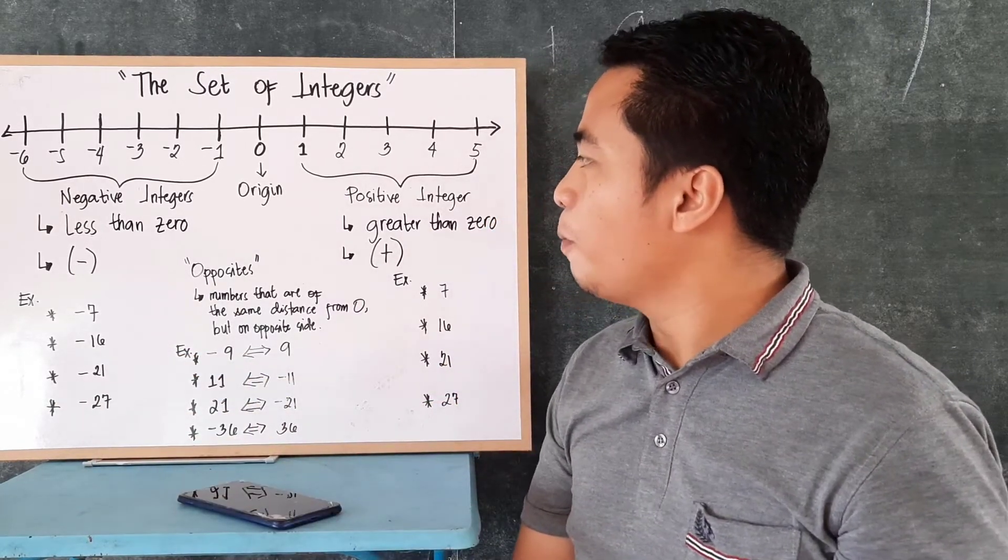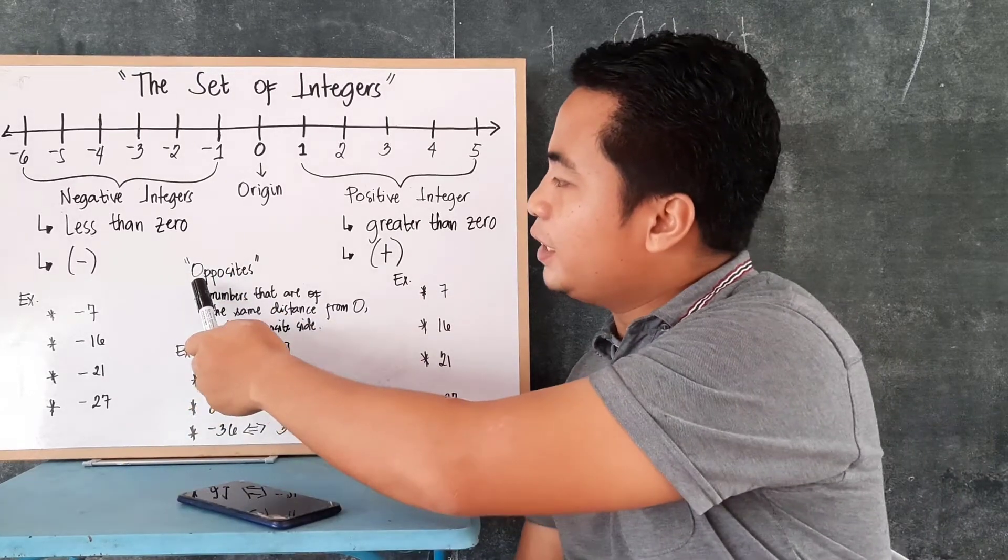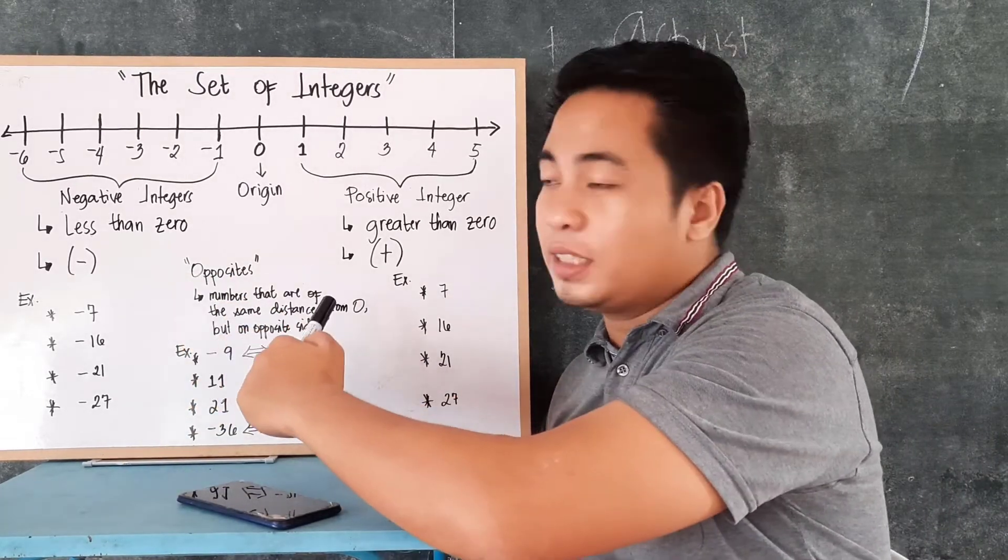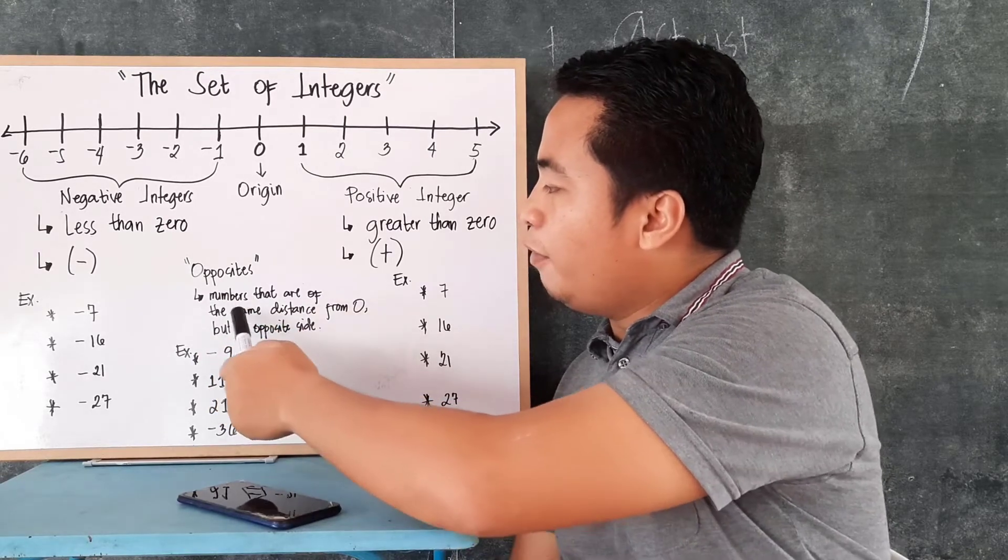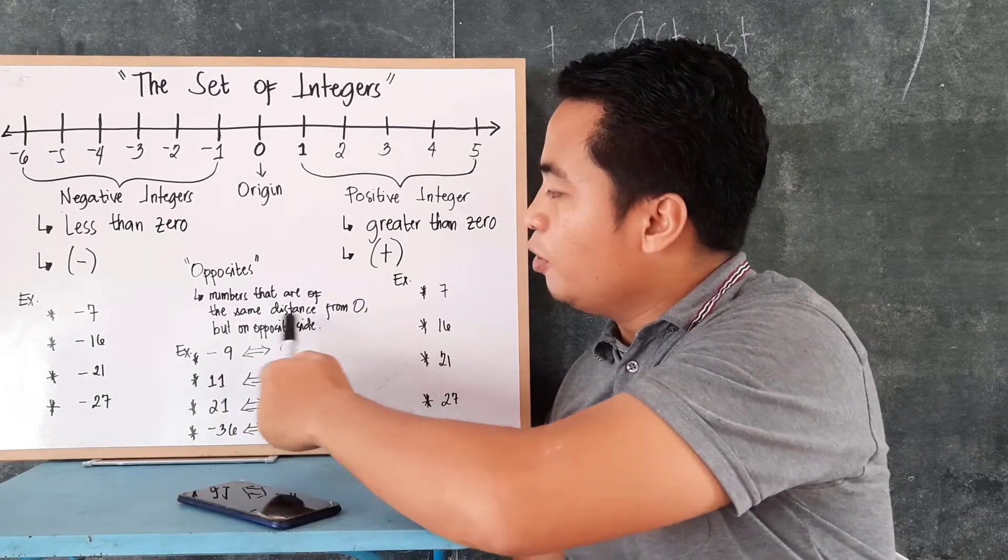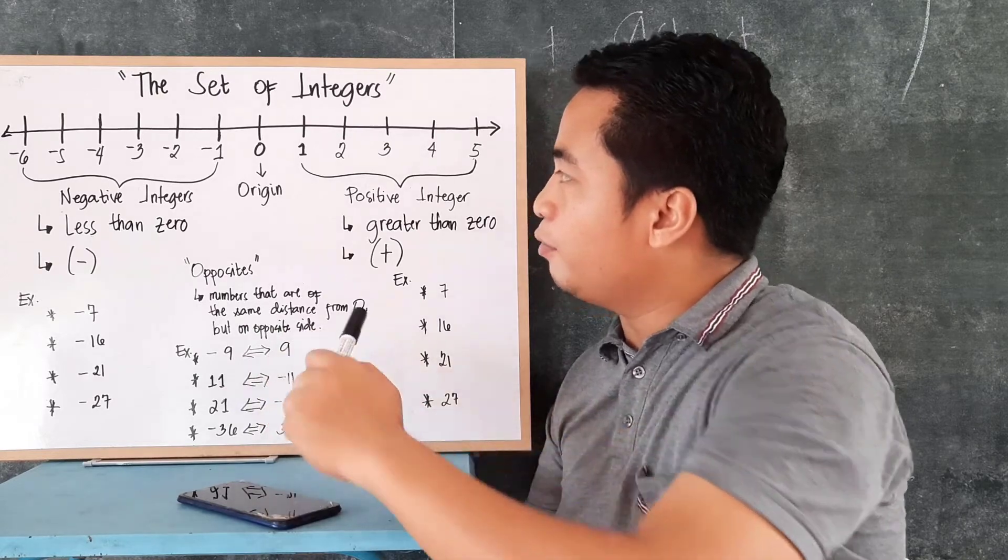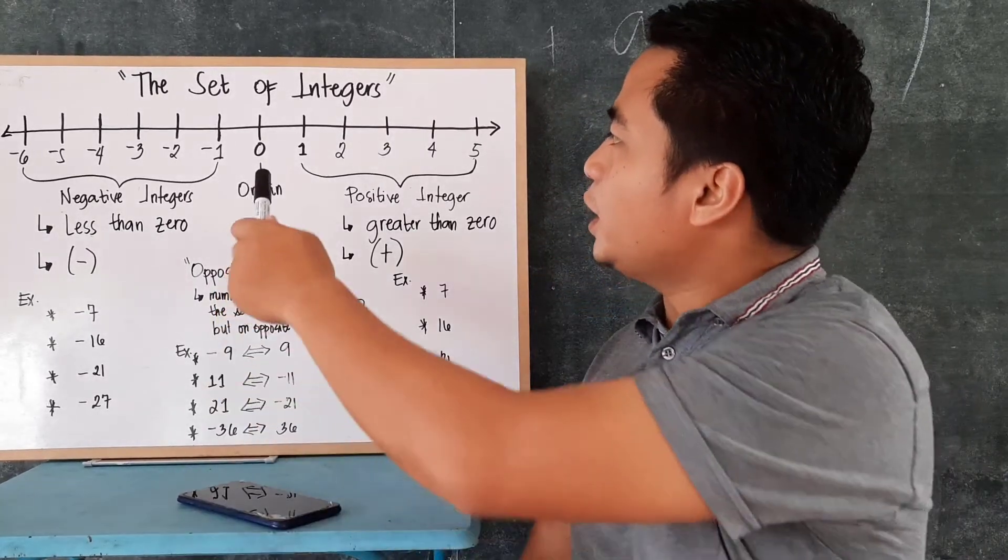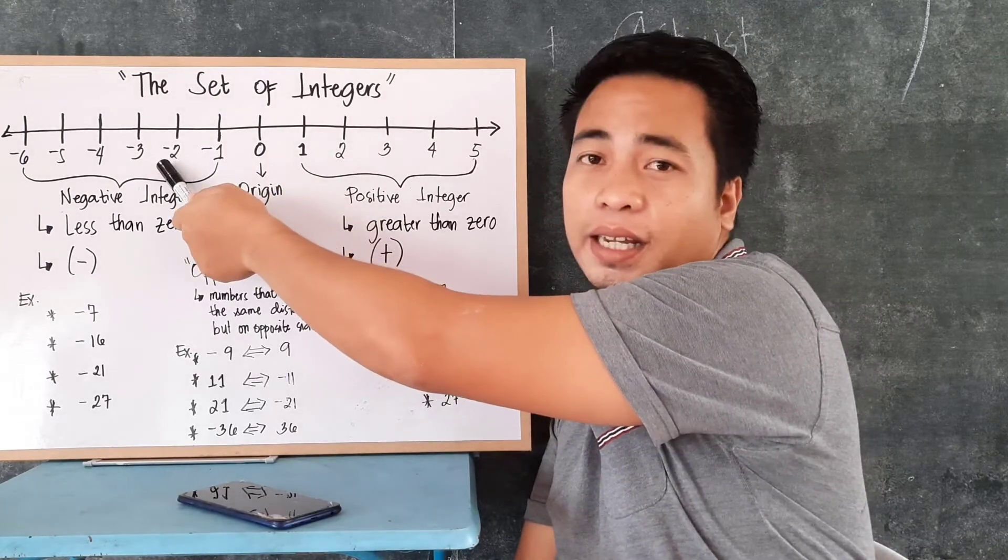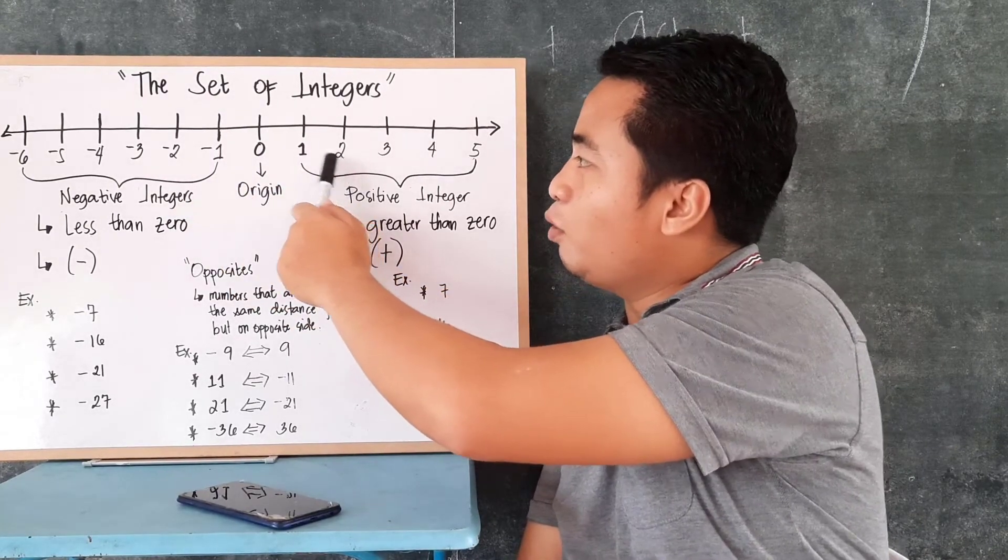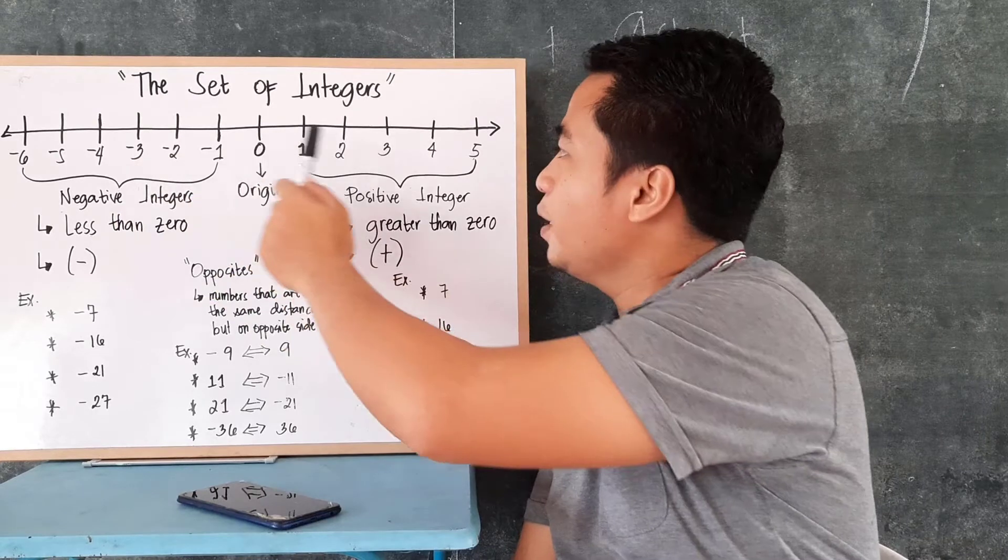Now, in algebra, we do have this, what we call opposites. The opposite, these are numbers that are of the same distance from 0, but on the opposite side. For example, what's the opposite of 1? It is negative 1. What's the opposite of negative 2? It's positive 2. What's the opposite of negative 3? It's positive 3.